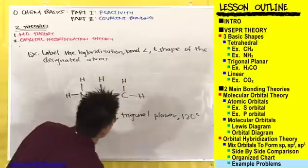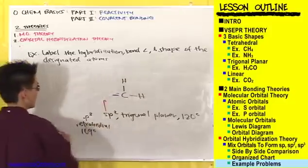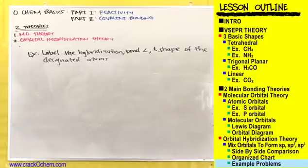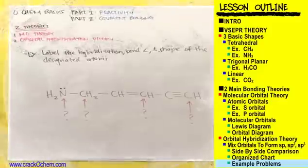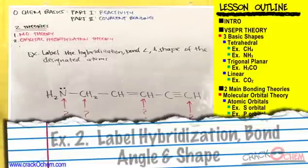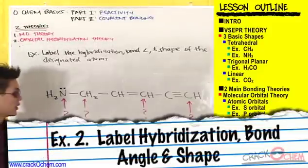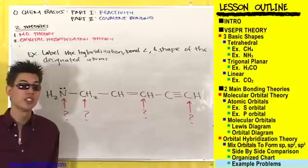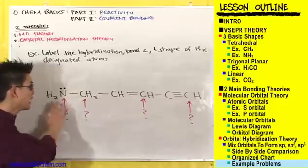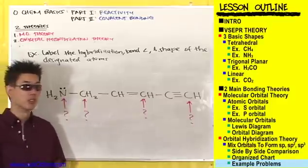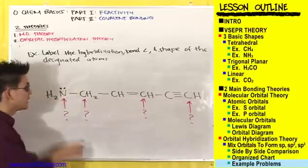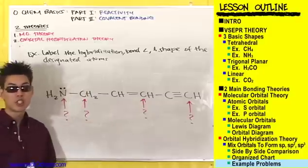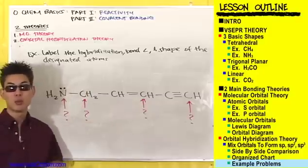Here's another example to try out. This one is a little more visually challenging than the last because the structure is condensed — not all the bonds to the hydrogens are drawn out. Make sure to take note of that when you're working through this problem.